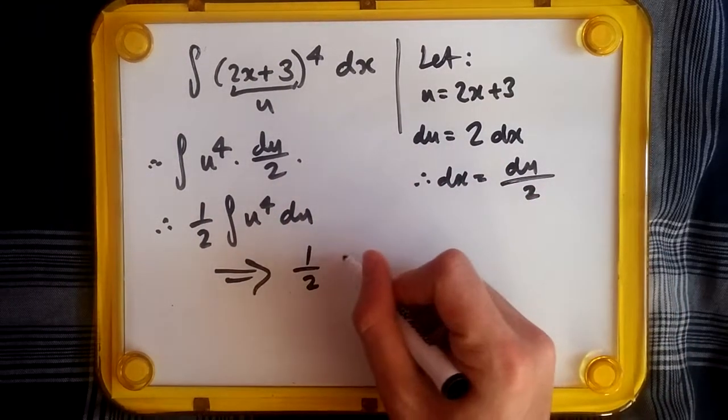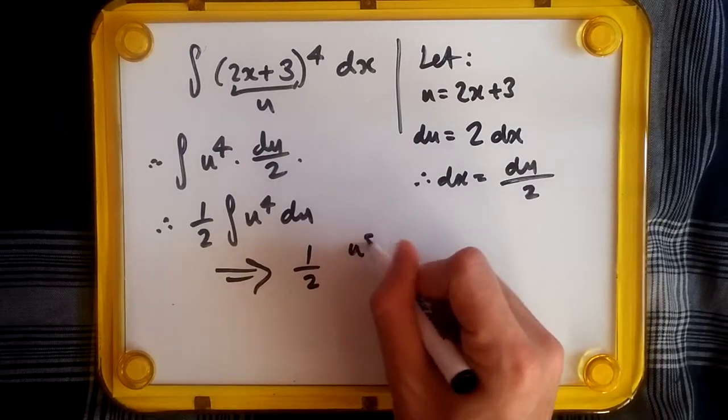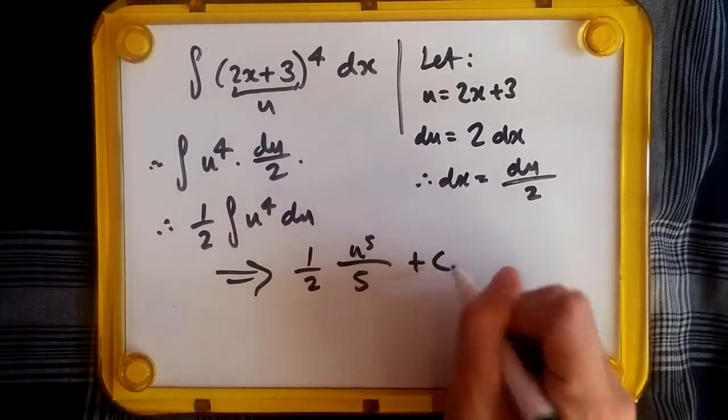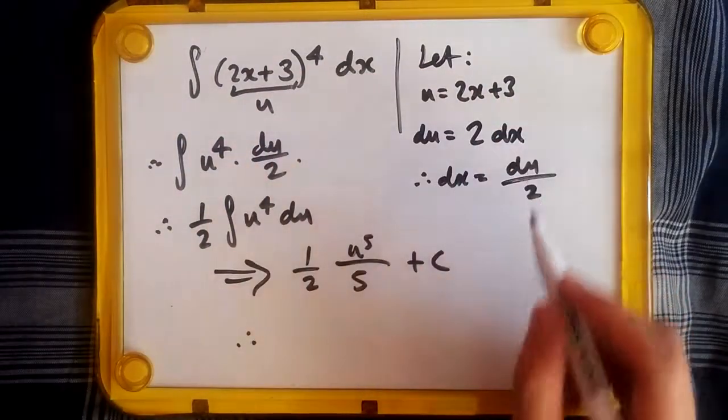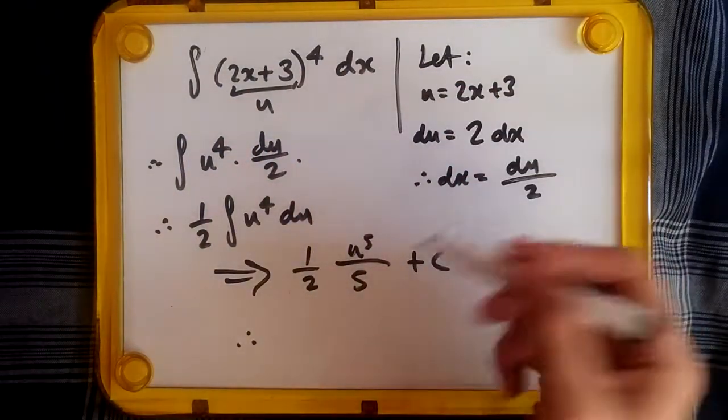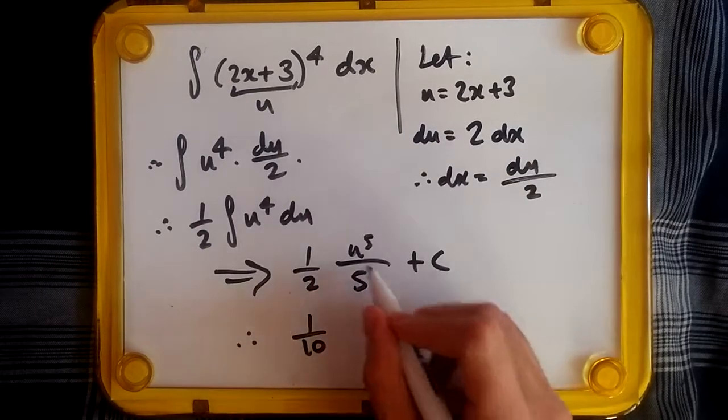So u^5 over 5 plus c. Hence, replacing u with 2x+3, and multiplying the 2 to the bottom, we should get 1/10 times (2x+3) to the power of 5 plus c.